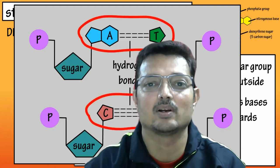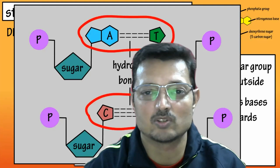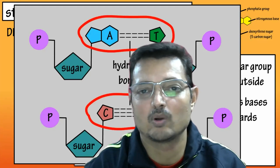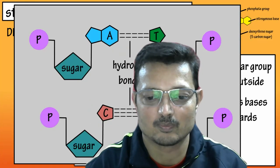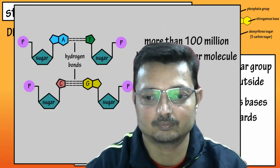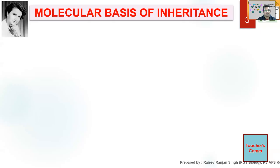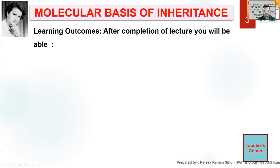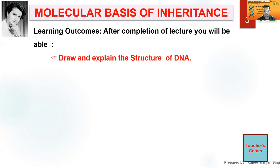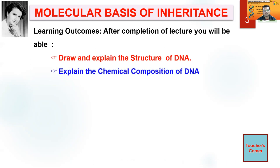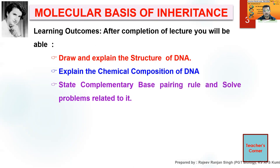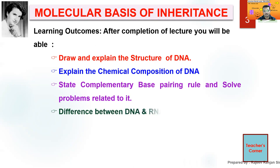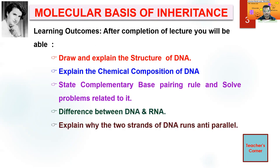But before that, let's have a look at the basic avenues of the DNA — this chapter on the molecular basis of inheritance. We'll be talking about every topic in detail. After completion of this particular lecture, you'll be able to draw and explain the structure of DNA, explain the chemical composition of DNA, state the complementary base pairing rule and solve some problems related to it, the difference between DNA and RNA, and explain why the two strands of DNA run antiparallel.